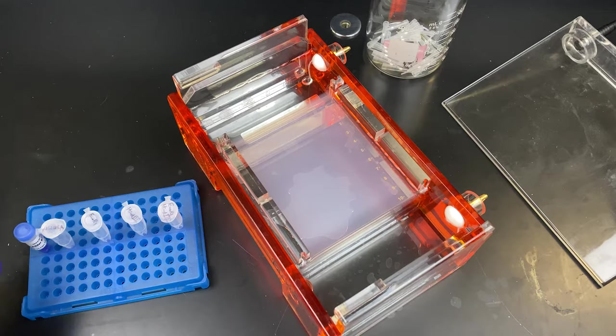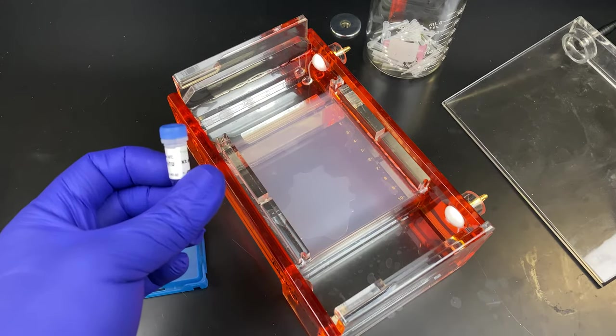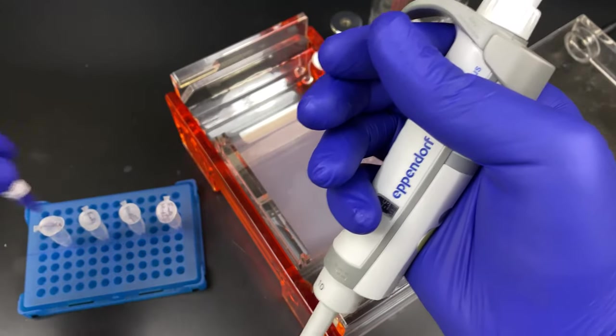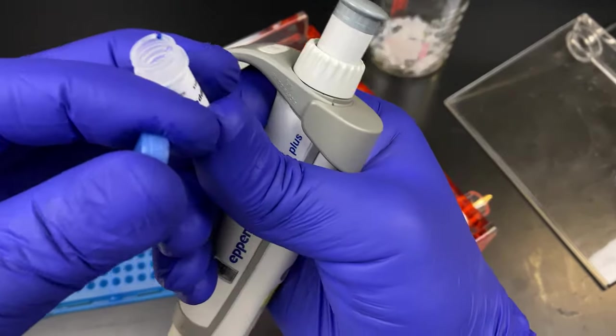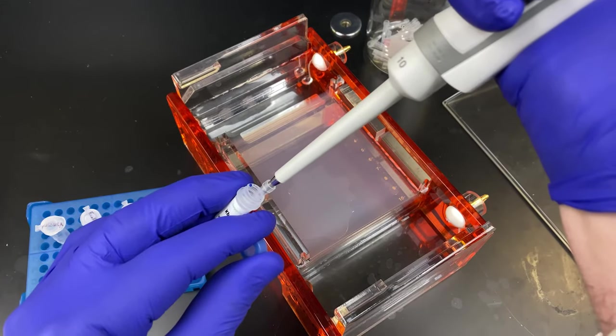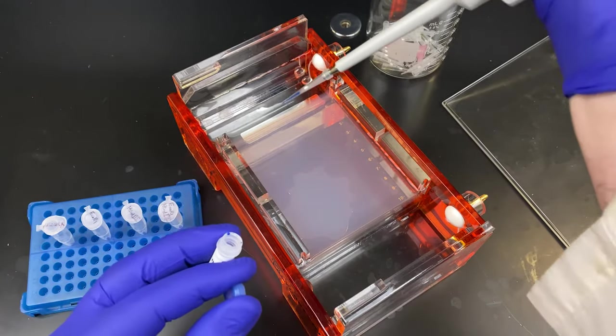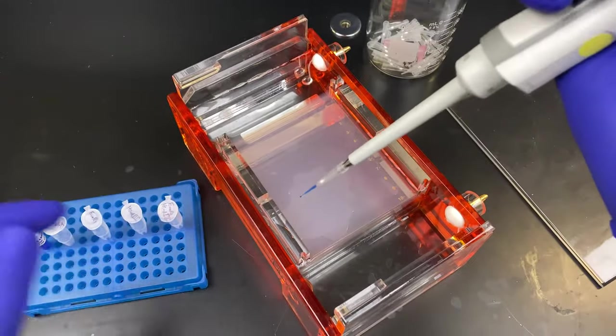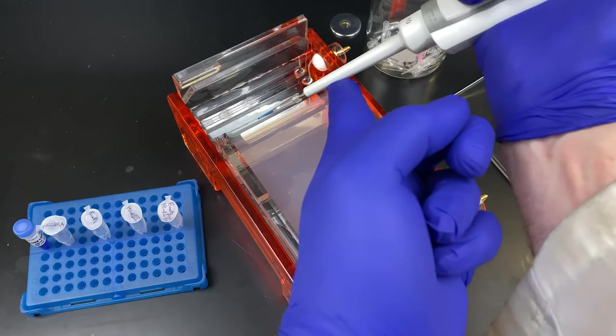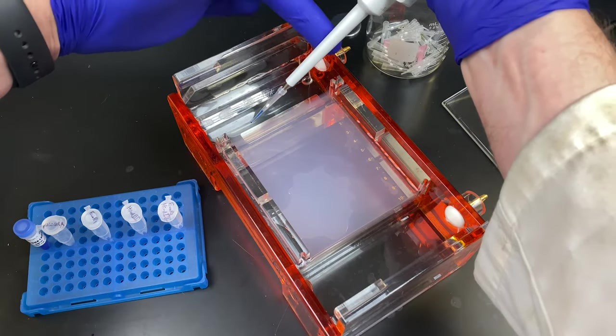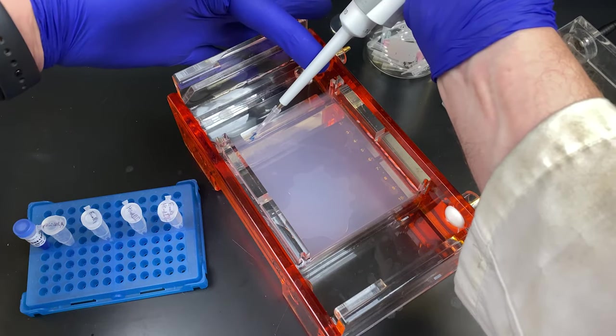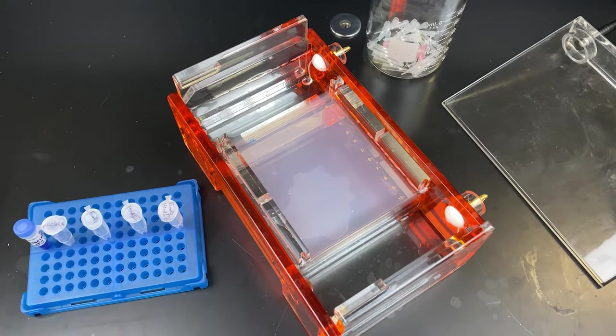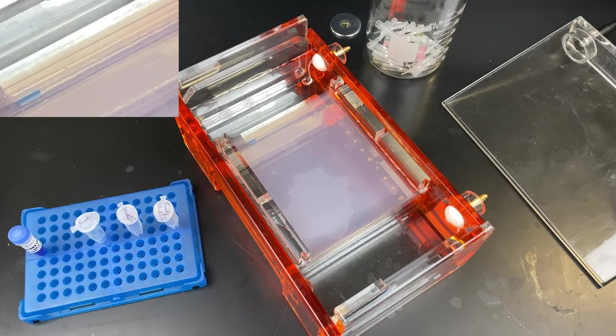We will start loading the gel with Ladder. This is pre-cut DNA of known size. It already has a loading buffer with it. We'll get the sample down to the bottom, and we'll load a small aliquot of it. We'll load that into the first well. I find two hands are easier to stabilize. We're going to take this. We're going to place it into the well underneath, and then once we have our pipette in the well, we will gently dispense the sample. I've now zoomed in on it.